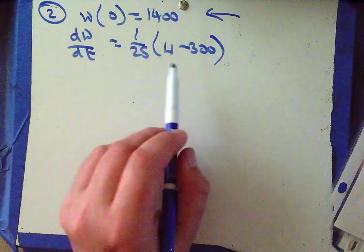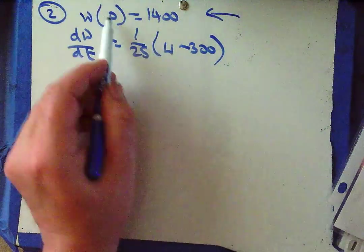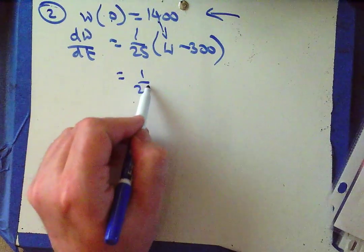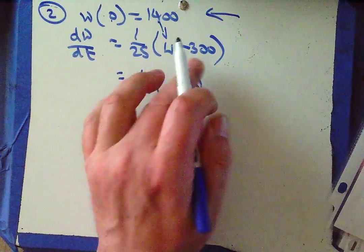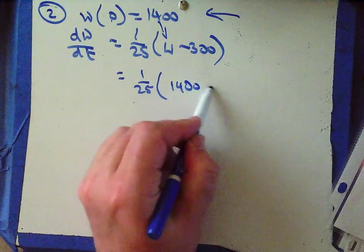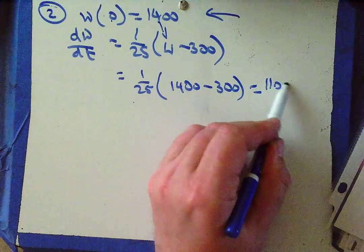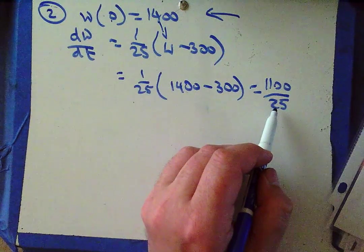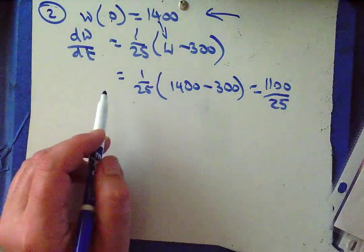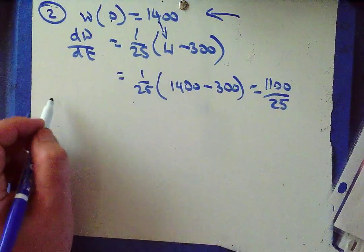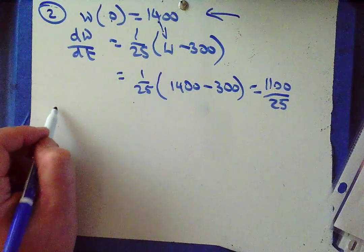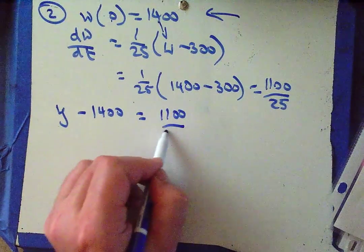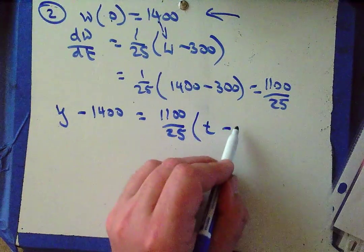So at t equals 0, W equals 1400. This is a W value I plug in there: 1/25 times 1400 minus 300, which is 1100 over 25. I'll leave it like that as my slope. And so my tangent line is y minus 1400 equals (1100/25)(t minus 0).